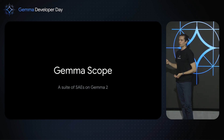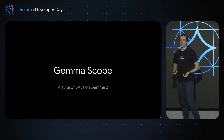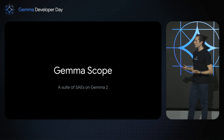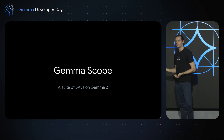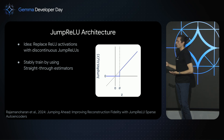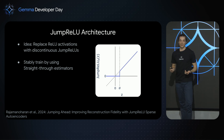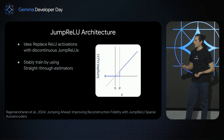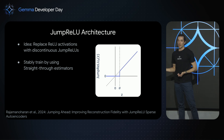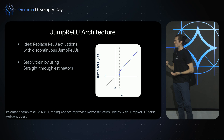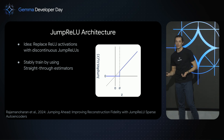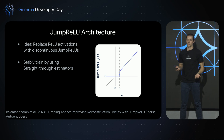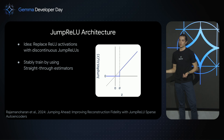GemmaScope is a comprehensive suite of over 400 different sparse autoencoders on Gemma 2 2B and 9B. This was enabled by our new state-of-the-art variant of the SAE architecture, where we replaced the standard activation architecture with a discontinuous jump activation and figured out how to stably train with this discontinuity by using straight-through estimators. If you'd like to learn more about this architecture, please check out the dedicated paper we wrote on it.